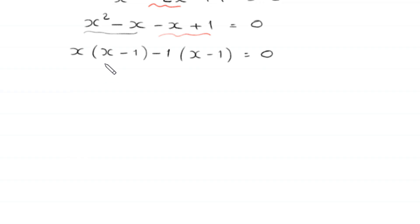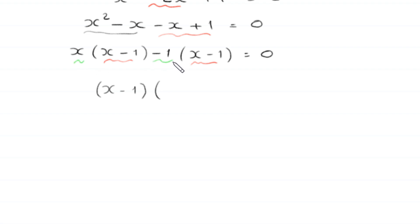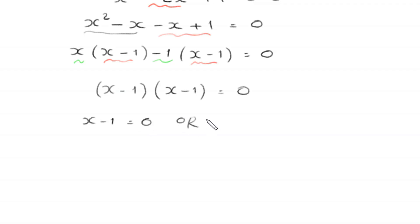Now, the expression x minus 1 is a common factor. So we factor it out, giving (x minus 1)(x minus 1) is equal to 0. From here, either factor x minus 1 is equal to 0, and from both cases x is equal to 1.